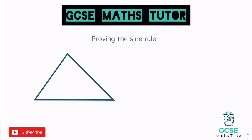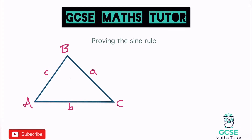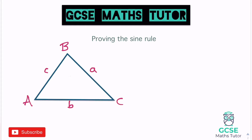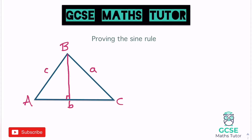First, looking at the sine rule. I've got a triangle here and I'm going to label it up just like we would when normally using the sine rule. This corner is big A and opposite is little a, moving clockwise the top is big B and little b, and the last one is big C and little c. I'm going to draw a line in for the height of the triangle, perpendicular to the base, giving us two right-angle triangles.